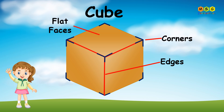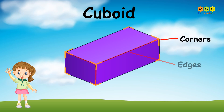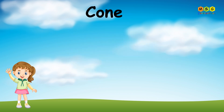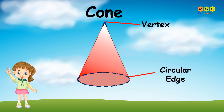Cube: a cube has corners, edges, and flat faces. Cuboid: a cuboid also has corners, edges, and flat faces. Cone: a cone has a vertex, a circular edge, and a curved face.